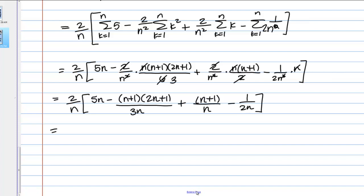And then as my last step, I'm just going to distribute that 2 over N, okay, so that's going to give me 10 minus 2(N plus 1)(2N plus 1) over 3N squared, plus 2(N plus 1) over N squared, minus, okay, so here the 2's are going to cancel, so just 1 over N squared. And maybe you could simplify this a little more, but we're going to stop here.